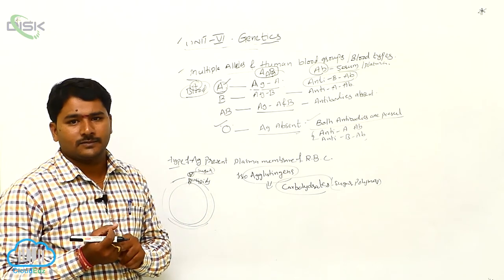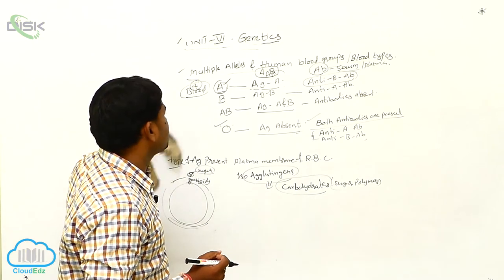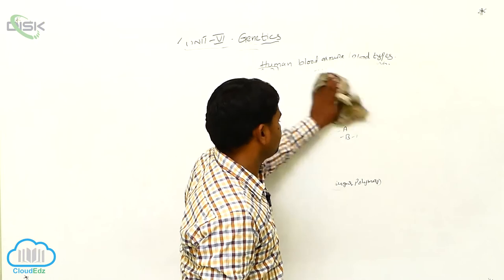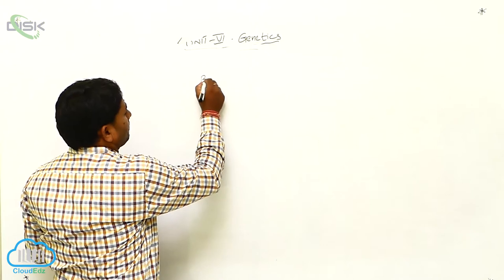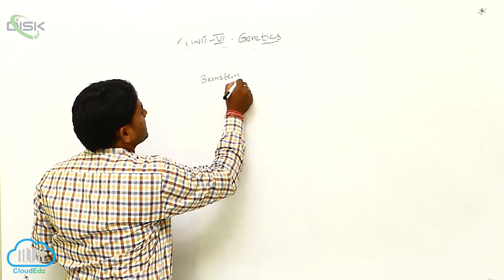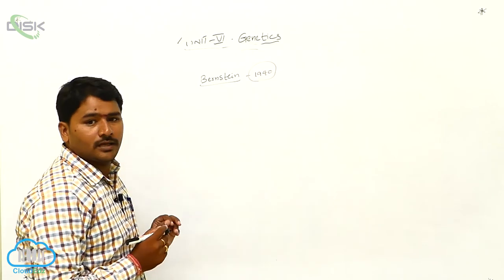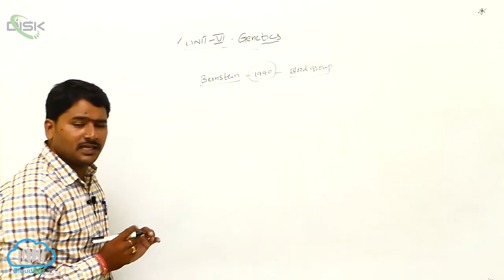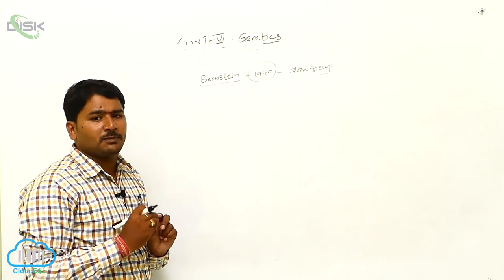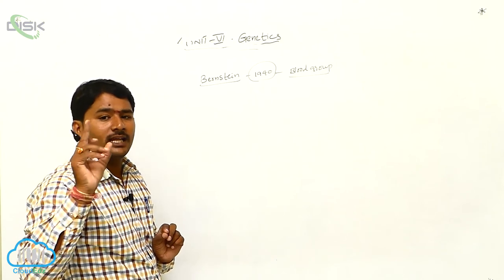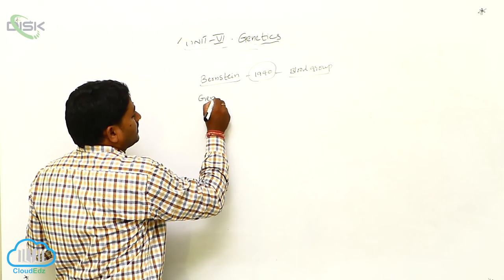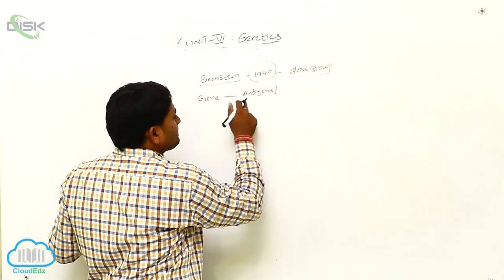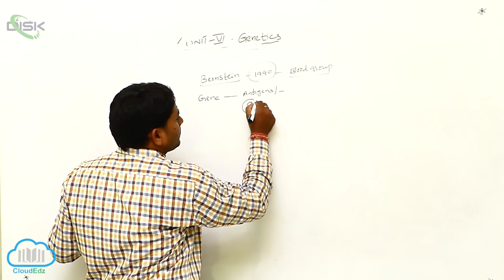What is the genetic basis of the blood group? The genetic basis of blood groups was discovered by Bernstein. The gene responsible for the production of antigens is located on the 9th chromosome.